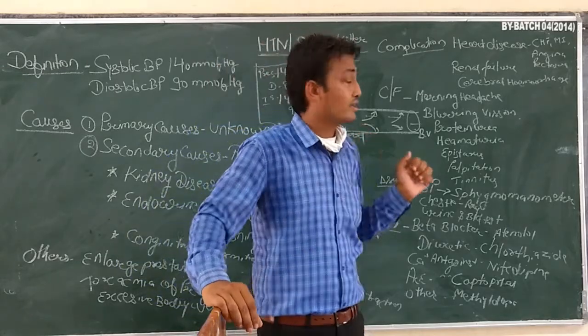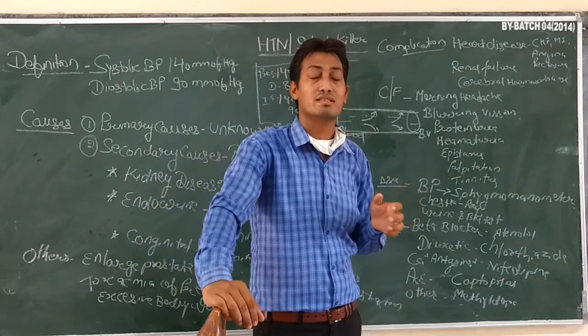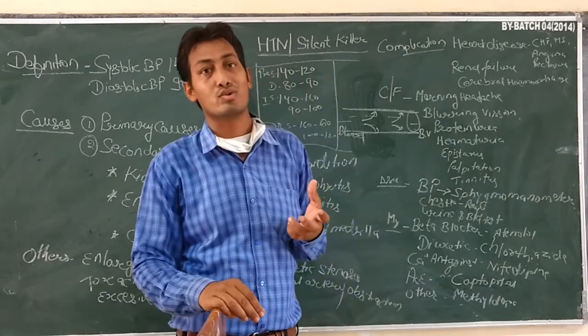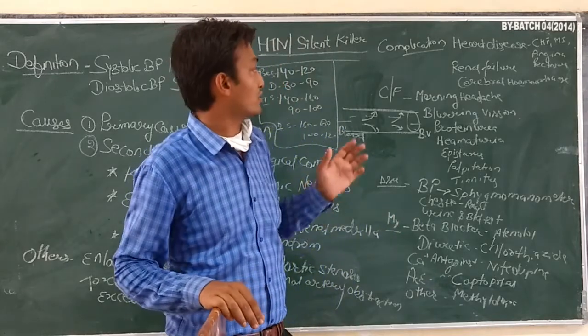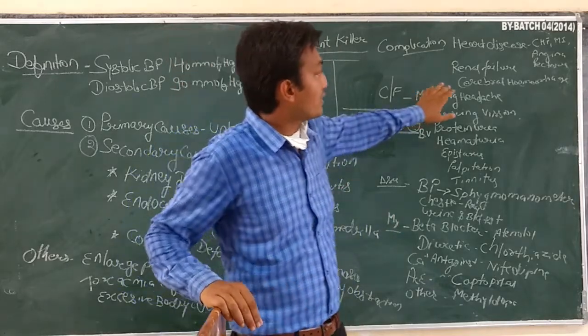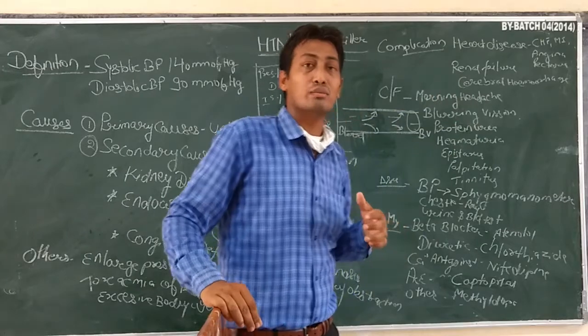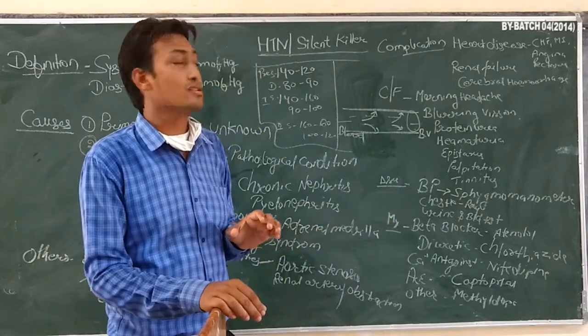Renal failure can be a complication. If blood pressure is increased, then renal failure may occur. Cerebral hemorrhage can also occur if blood pressure is increased.